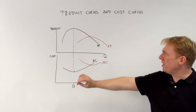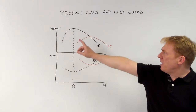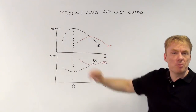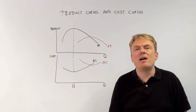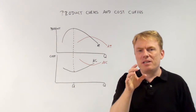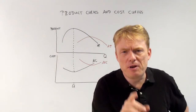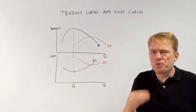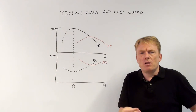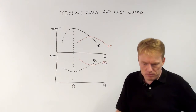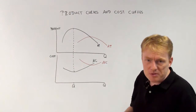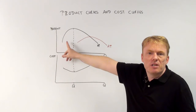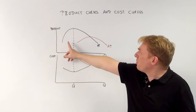Marginal costs will go down if and only if marginal product goes up. Let me explain this again because this is very important. If quantity rises and total product becomes steeper, it does become steeper if marginal product rises.